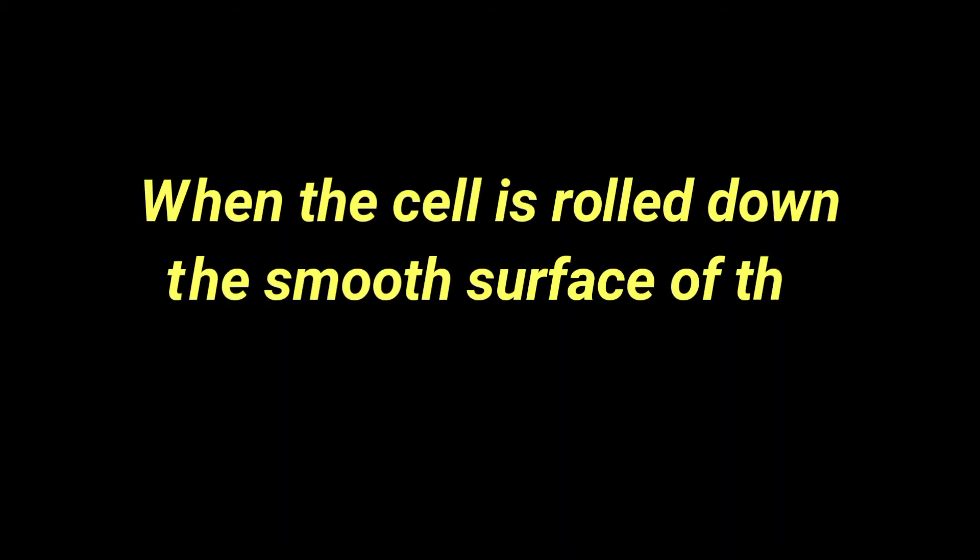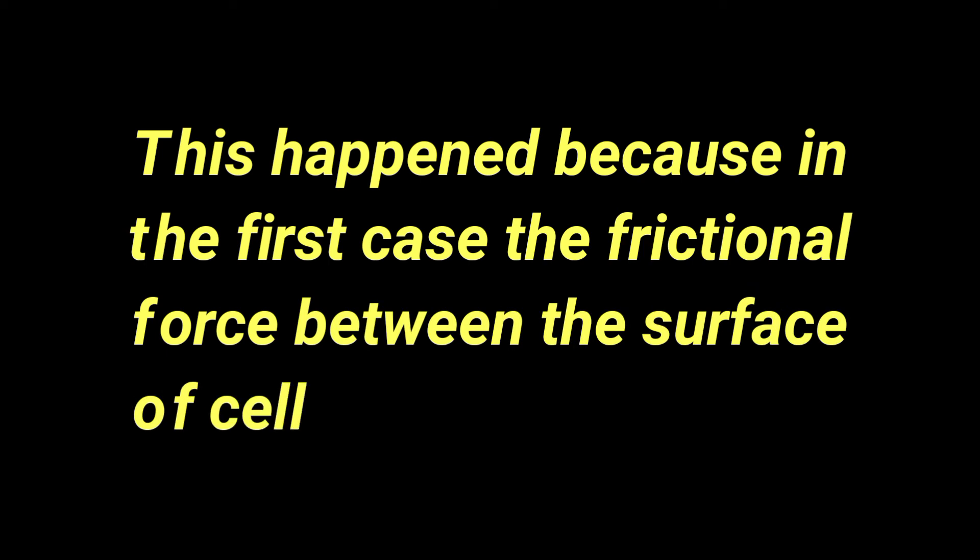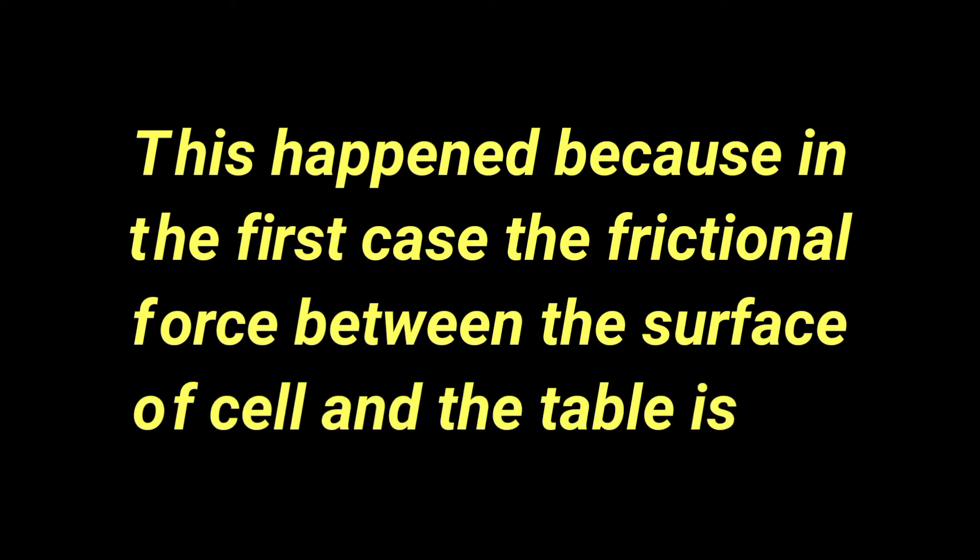Let's discuss what we observed from the two cases. When the cell is rolled down the smooth surface of the table, it goes across and falls down. But in the second case it stops midway. This happened because in the first case, the frictional force between the surface of the cell and the table is low — the surface of the table is very smooth.